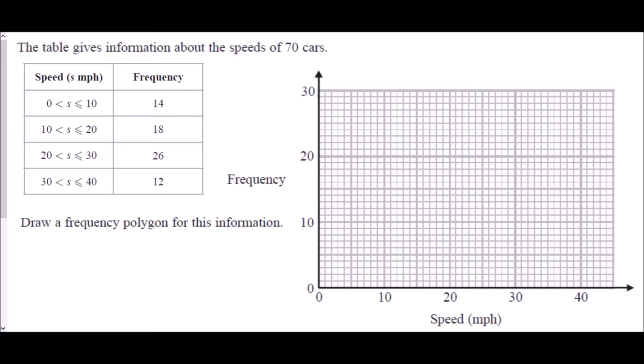Now the most important element that we need to begin with is where we are actually going to plot these points. We can obviously see we need to plot the frequency as the y-axis, as it is shown that the y-axis is the frequency, but then we have the speeds. How do we plot a group which is 0 to 10? Well, the important thing here is that we need to use the midpoint. We use the midpoint of the group to represent the group as a whole.